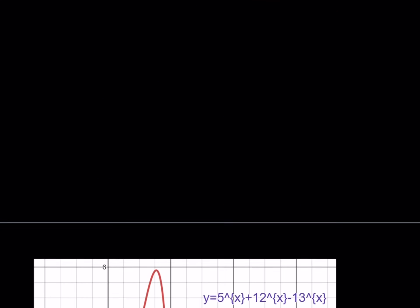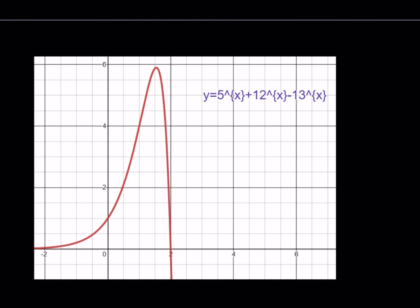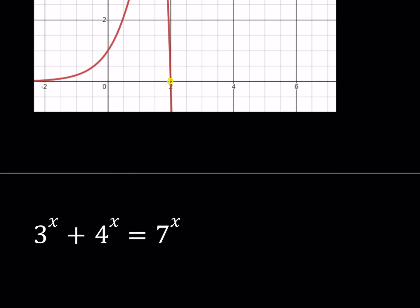Let's take a look at the graph of this function. The function is y equals 5 to the power x plus 12 to the power x minus 13 to the power x. This equation has a solution where it equals 0, and x equals 2 is the only solution because the graph has only one x-intercept. As x approaches negative infinity, y approaches 0; the function reaches a maximum somewhere, then decreases forever. So we have confirmed one solution, verified by the graph as well.